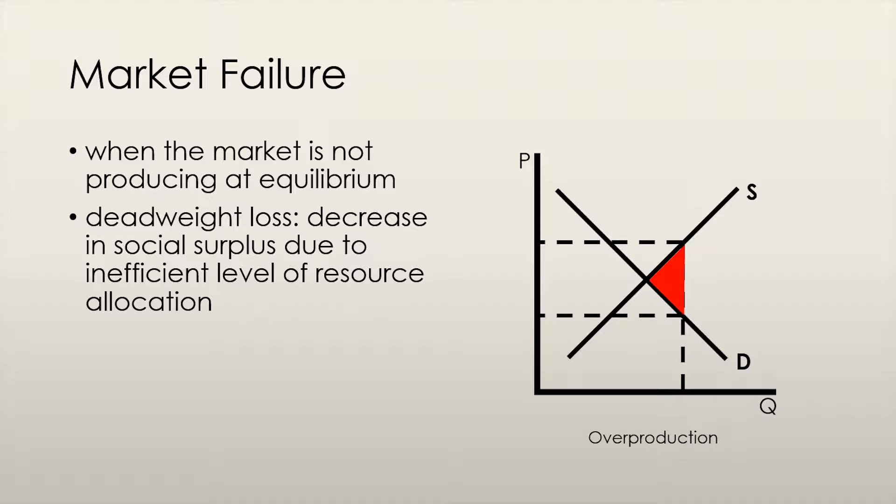Similarly, sometimes an economy might overproduce a good. Again, I'll go through some of the reasons why this might happen in just a bit. In this scenario, the quantity supplied of the good exceeds the equilibrium quantity, so producers are producing more than the optimal amount. This results in the price being driven down and creates a similar deadweight loss situation as the previous example.